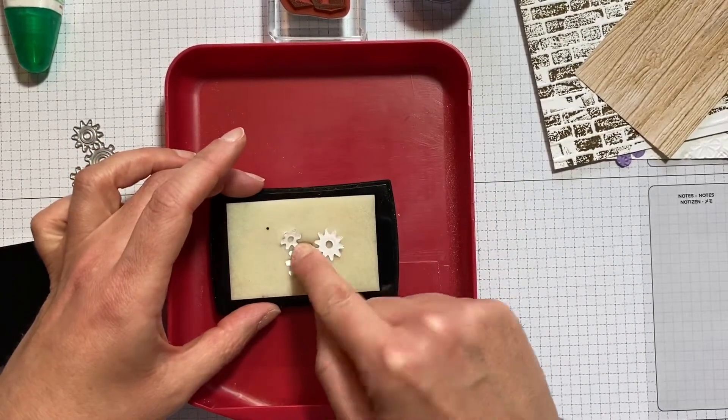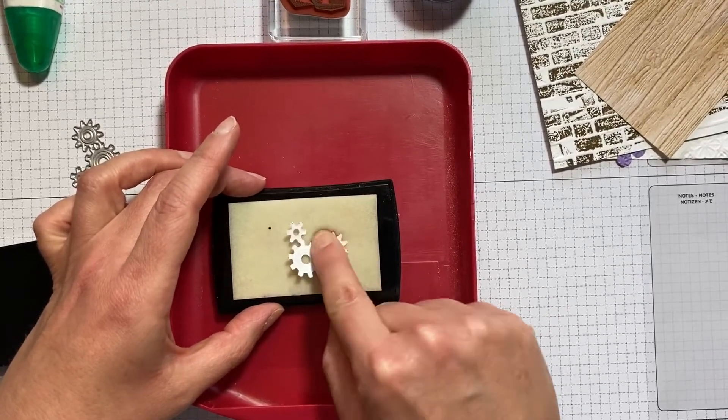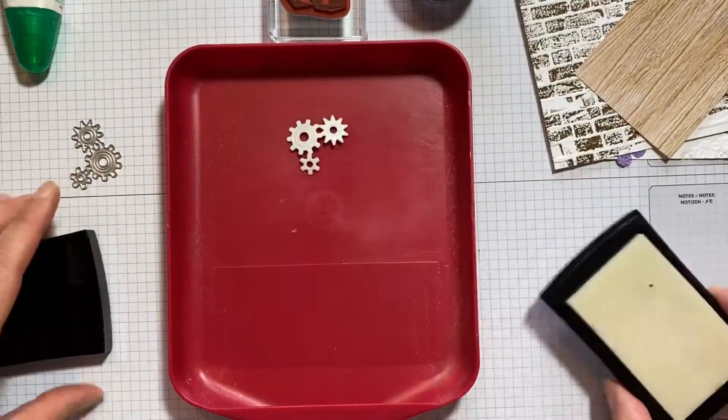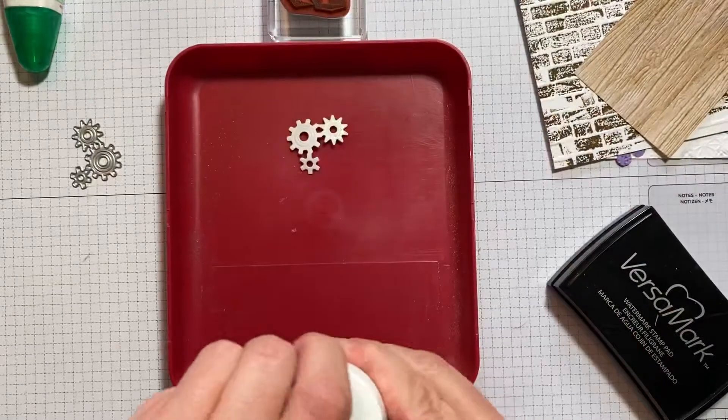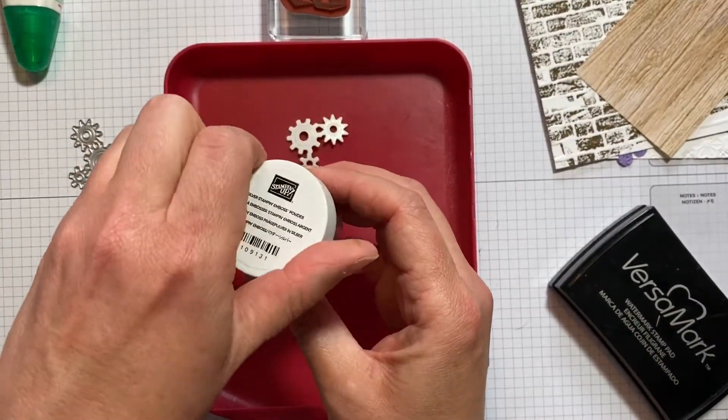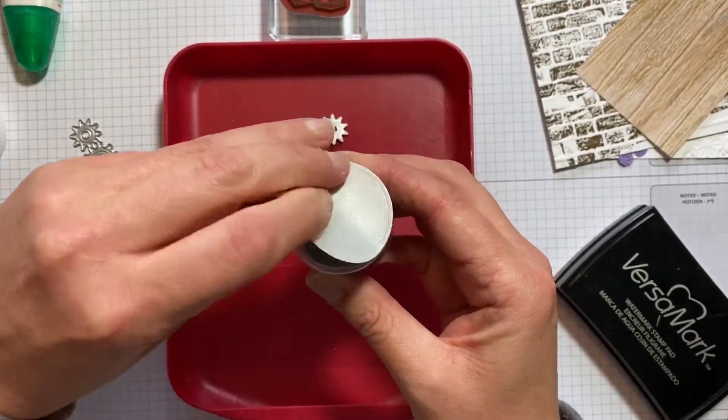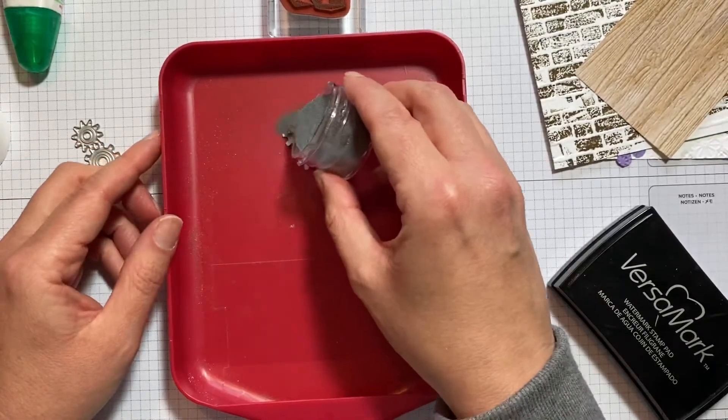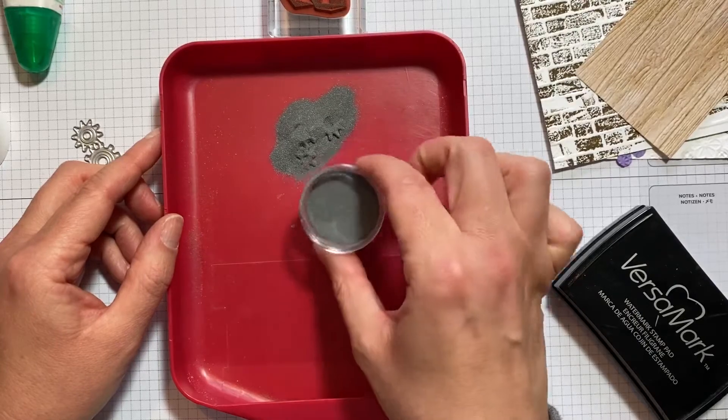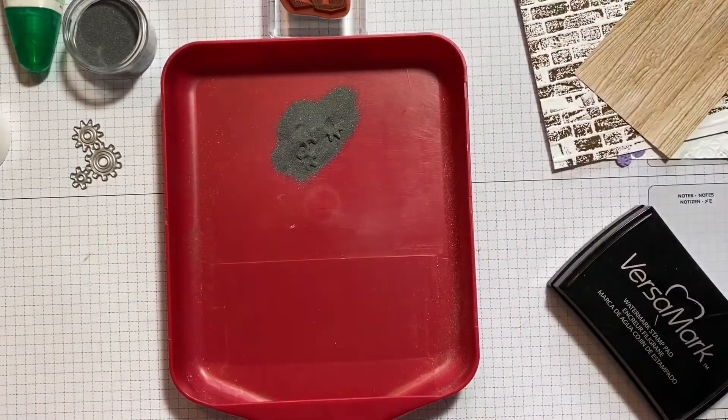And the die cut, I'm literally pressing it into the pad. Flip it over, take the pad out of the way, pop my powder—oh, we've got a sticky lid there—there we go, pop my powder all over. Don't be scared of putting plenty in; you're going to rescue the vast majority of it anyway.